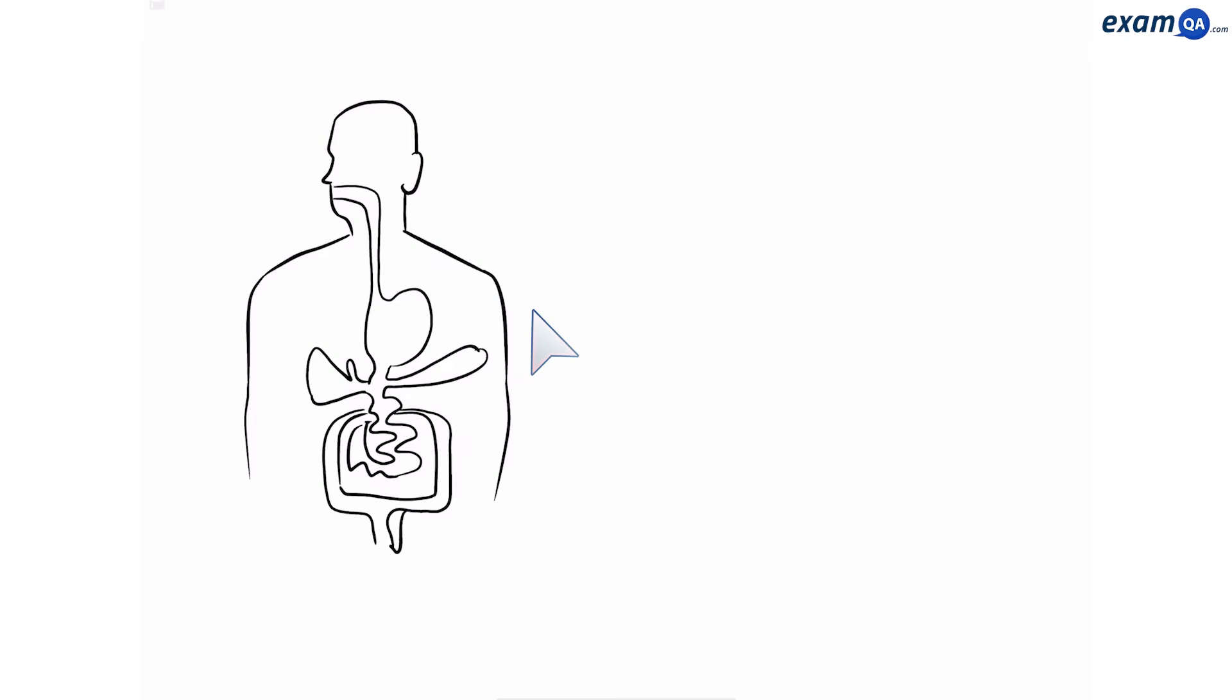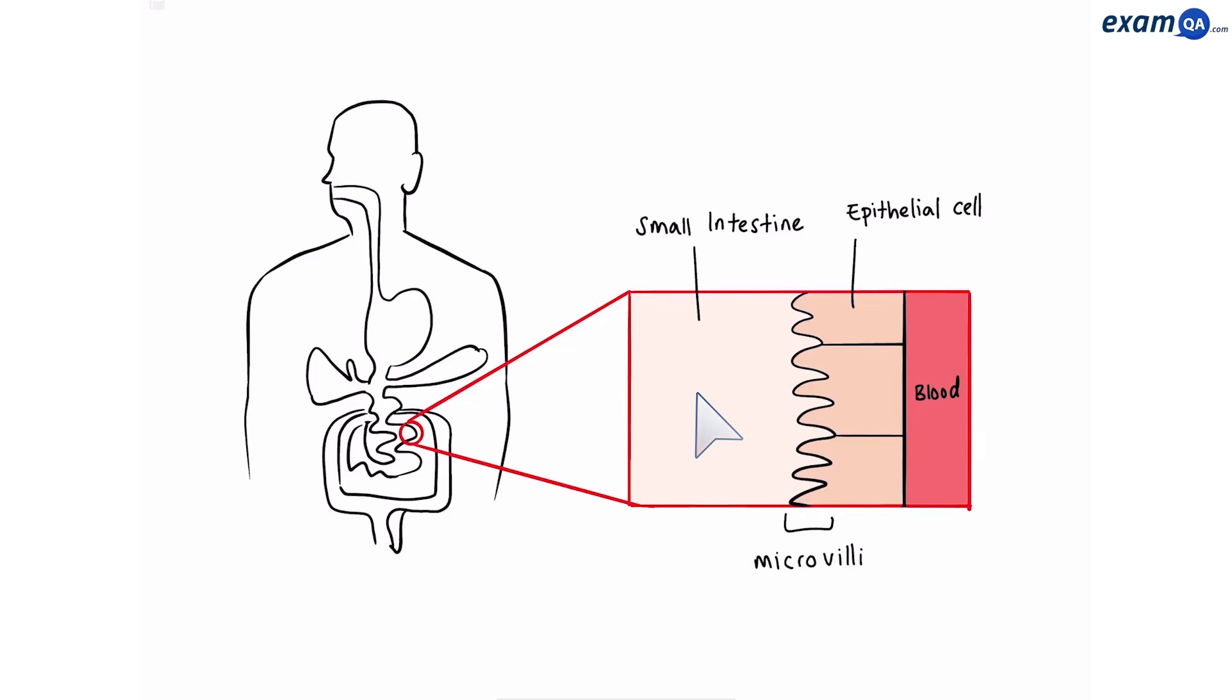We'll take a trip to our favorite organ system in the whole body, the small intestine. Here we have the small intestine and the blood and between them, we have a layer of epithelial cells. We're going to see how glucose goes from the small intestine into the epithelial cell and then from there into the blood.